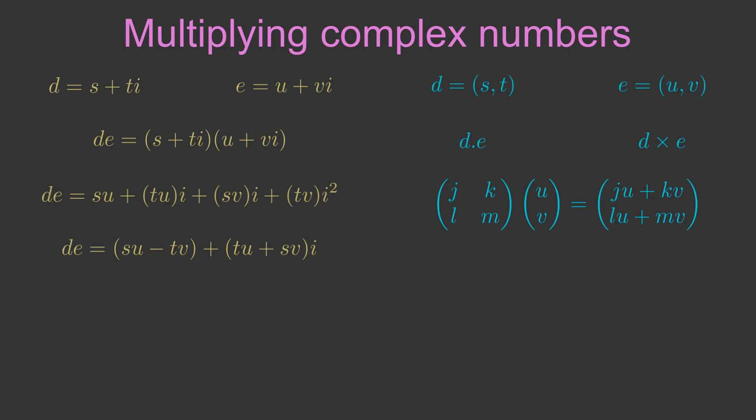Comparing the two equations, if we set j equal to s, k equal to minus t, l equal to t and m equal to s, they will produce exactly the same result. We can pre-multiply e by this matrix and get exactly the same result as we got from complex multiplication.